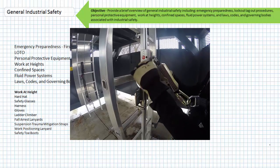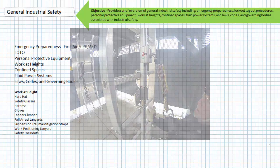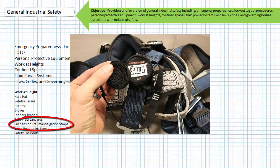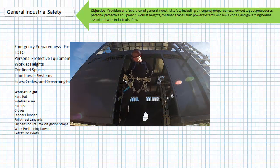Suspension trauma mitigation straps are devices that are deployed in the event of a fall. A worker suspended from a harness for any length of time can have deoxygenated blood pool in their lower extremities and be quickly rendered unconscious. These straps are used to allow a worker to move into a more comfortable position and assist in their own rescue. Here's a clip of suspension trauma mitigation straps being deployed and utilized.